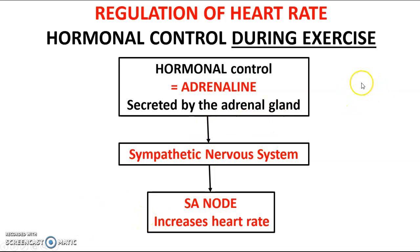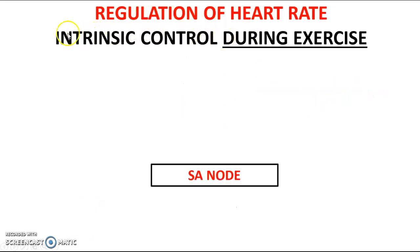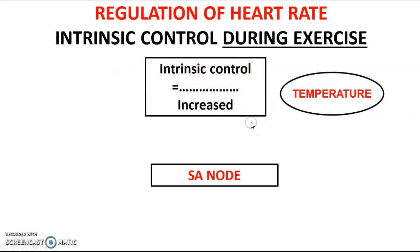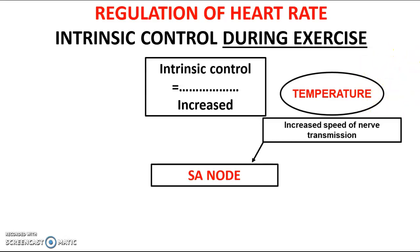The final mechanism is intrinsic control, which has two key components. The first is temperature. During exercise, muscles and blood increase in temperature. This increased temperature increases the speed of nerve transmission to the SA node, which means the impulse reaches the SA node more quickly, leading to an increase in heart rate.